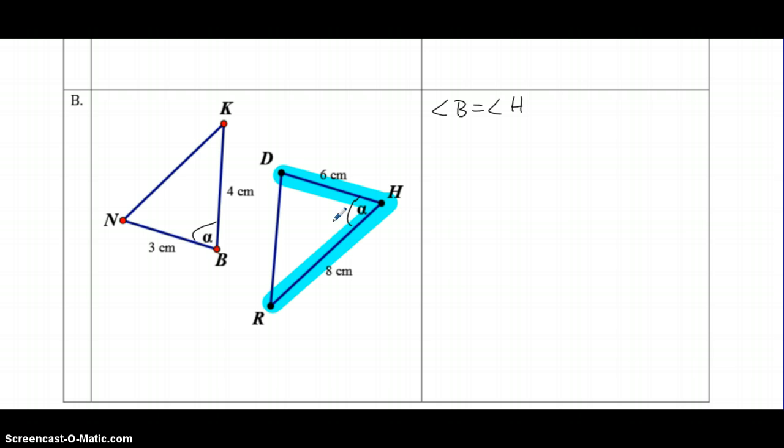So in this triangle, I have sides 6 and 8. In this triangle, I have sides 3 and 4. So I'm going to set up my ratios again. I'm going to match bigger number from one triangle to bigger number of the second triangle, and then the smaller number, 6, and the smaller number over here is 3. Reduce each one, and I get 2 over 2.